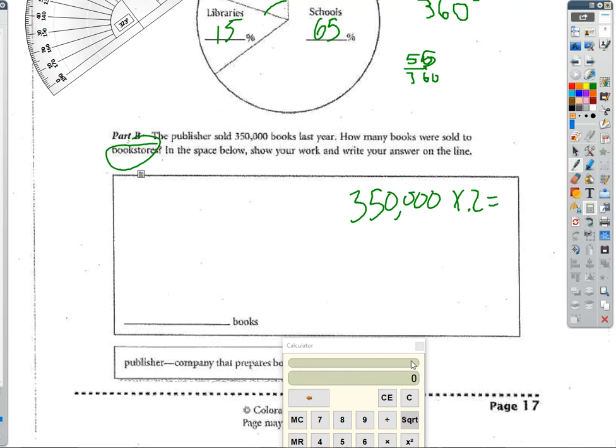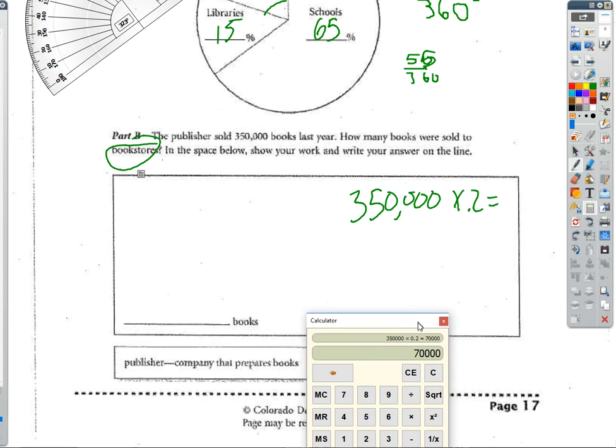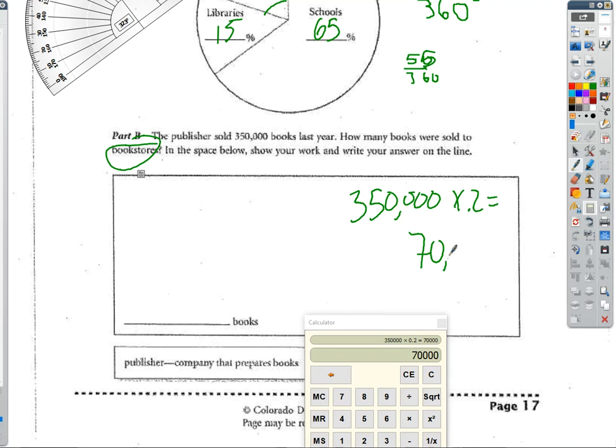So let's go ahead and multiply it out. So 350,000, that works, times 0.2, and I get 70,000 books.